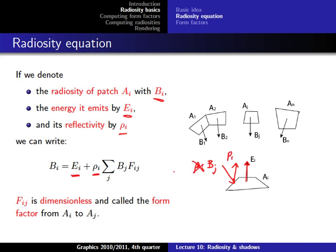We sum over all patches j to accumulate all incoming energy. The full radiosity equation for patch Ai includes Ei (the energy it emits itself) plus the sum over all j of the radiosity Bj reflected from other patches, weighted by ρi. There is also another factor Fij — the form factor from patch Ai to Aj — a dimensionless factor that models how much energy from one patch reaches another.